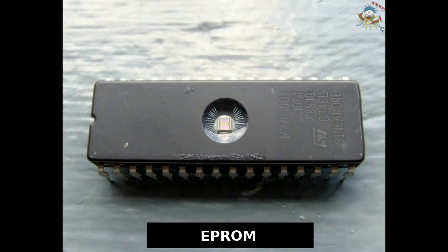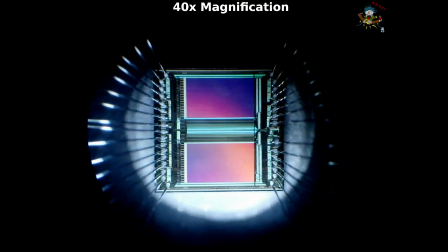I'm going to use my microscope and look into the window to show you the internal structures of the EPROM. You're looking at a 40 times magnification of the silicon chip, which is approximately 3 millimeters square.